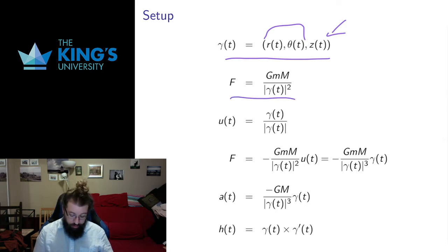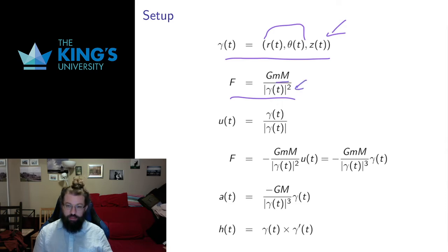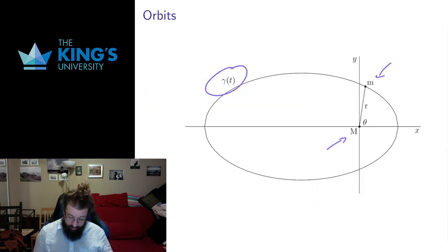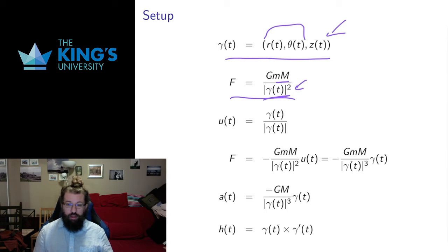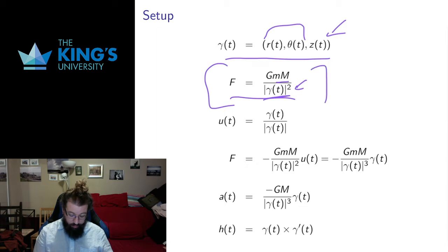The force of gravity given by Newton is the gravitational constant times the two masses divided by the distance between them squared. The distance between the two masses is precisely the length of the vector gamma. So the length of gamma squared shows up as the denominator of this scalar force of gravity.